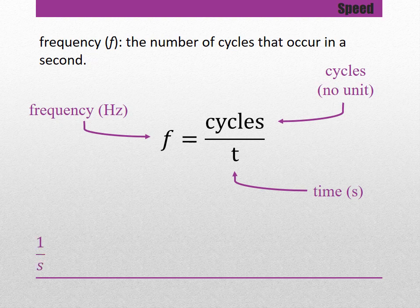Frequency equals cycles divided by time, which gives a unit of 1 over s. This can also be written as 1 divided by s to the power of positive 1. You may recall from math class that moving numbers between the numerator and denominator changes the sign of the exponent — positive becomes negative. So moving s to the positive 1 from the denominator to the numerator gives s to the minus 1, and anything divided by 1 equals itself, so the unit is s to the power of negative 1.